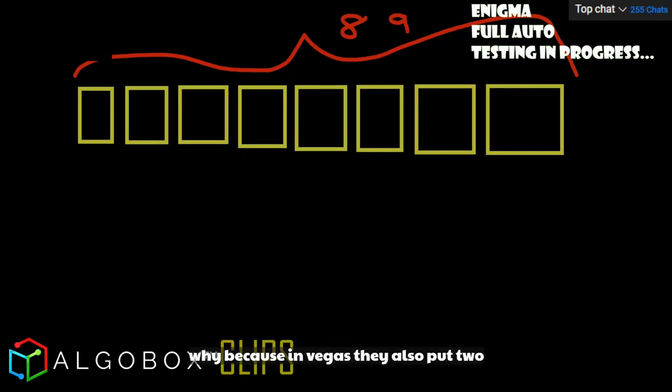The roulette wheel at Vegas is completely random, red-black, but it's not 50-50. Why? Because in Vegas they also put two blanks in there, and anytime the blanks are hit the house wins. So it's not 50-50, it's slightly off. The house is always tilting things slightly in their favor.